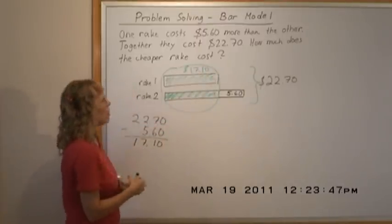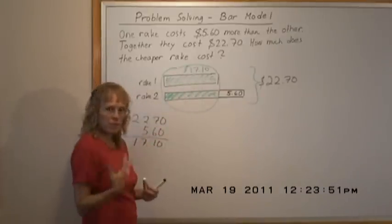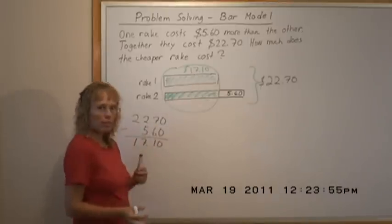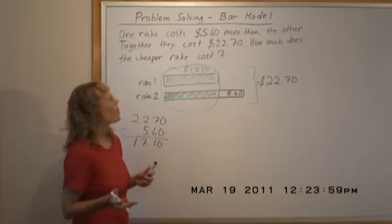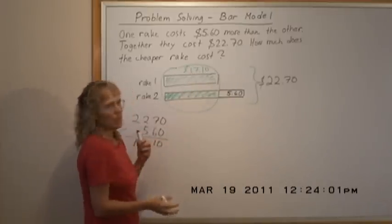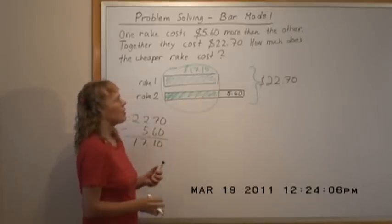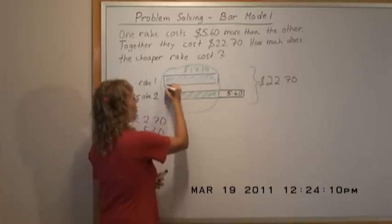And then of course each bar here, each green part, is just half of $17.10. So to take half of $17.10, you can divide by two using long division or you can use mental math. $17 divided by two would be $8.50, and then $0.10 in half is $0.05, so $8.55.